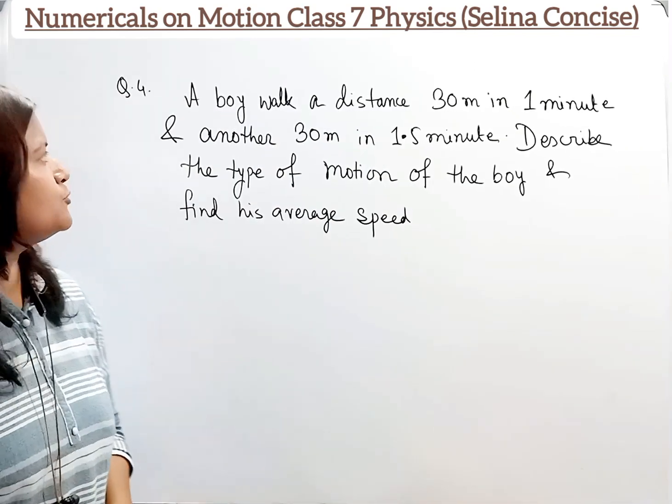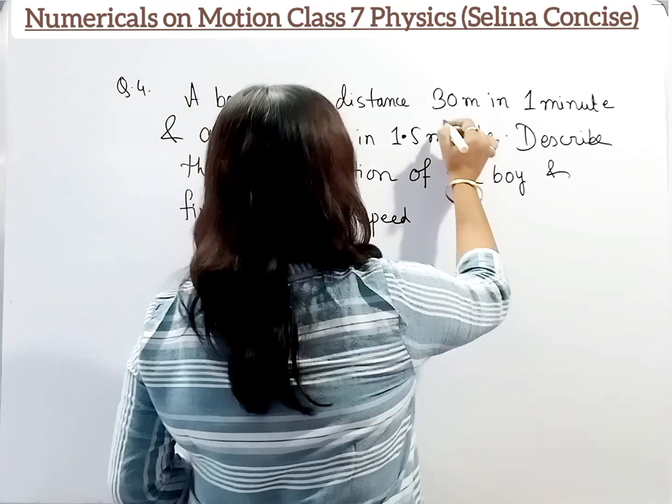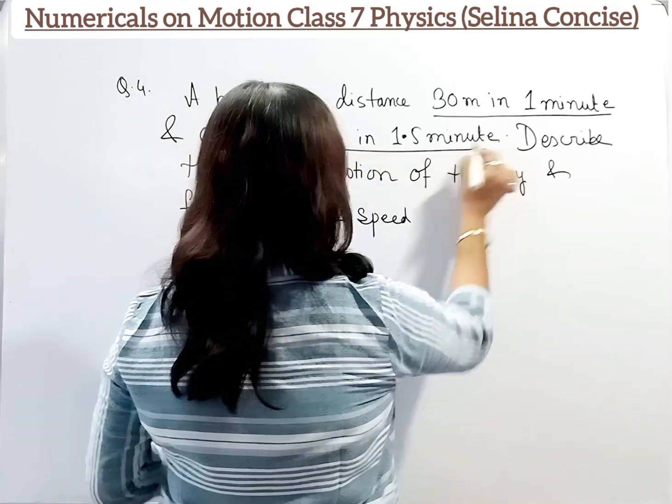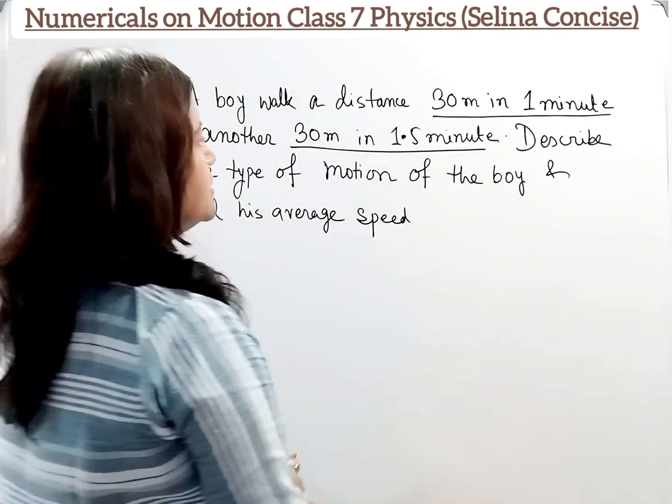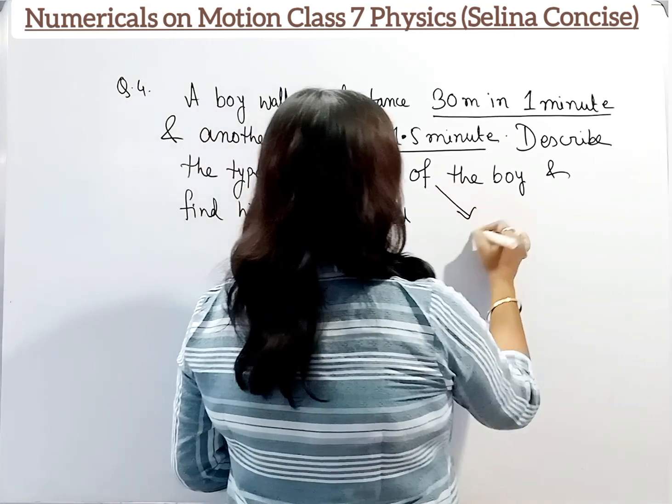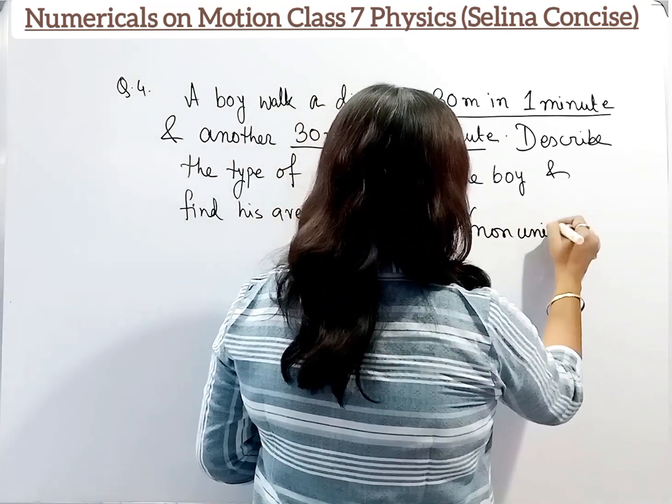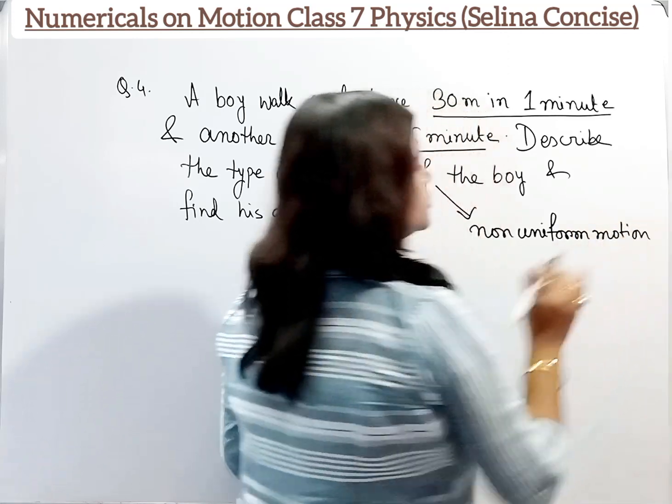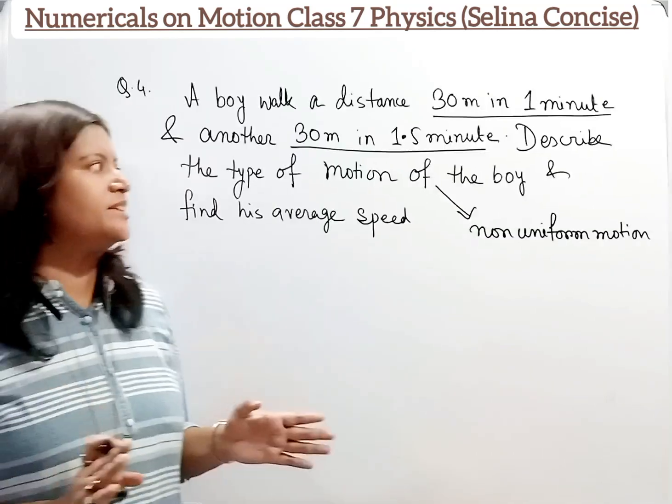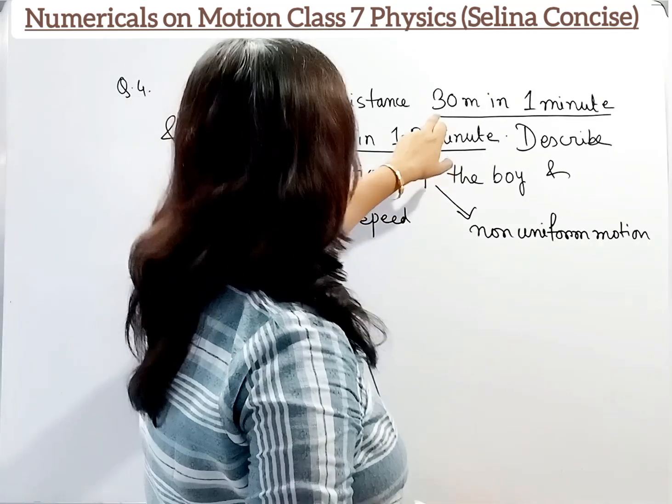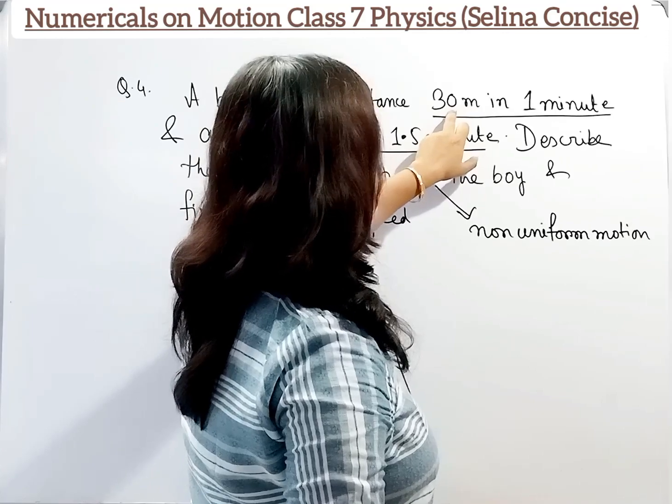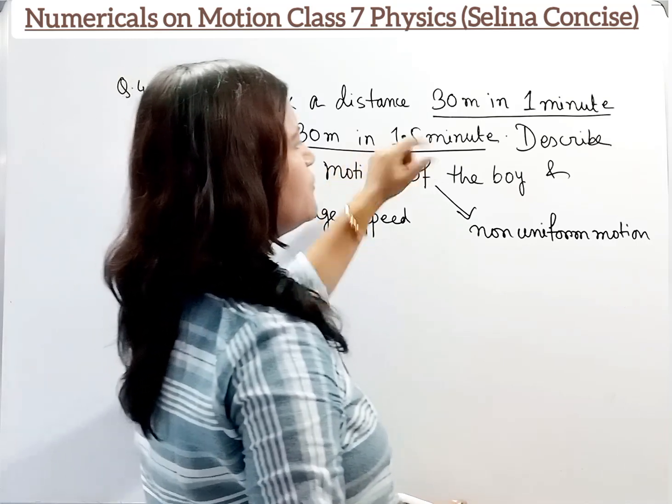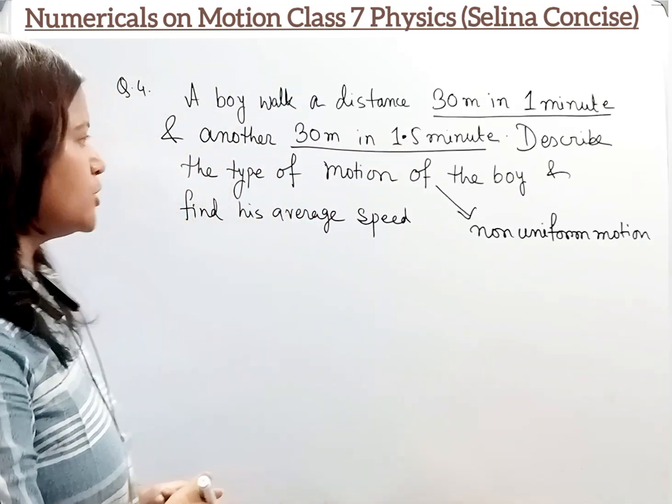Now question number 4. A boy walks a distance of 30 meters in 1 minute and another 30 meters in 1.5 minutes. Describe the type of motion. The type of motion is non-uniform motion because in uniform motion the body covers equal distance in equal intervals of time. But here in the first 1 minute he covers 30 meters, and for the second 30 meters he takes 1.5 minutes. That means this is non-uniform motion.